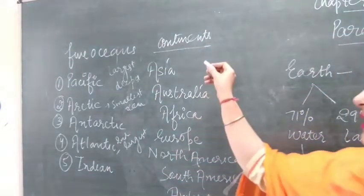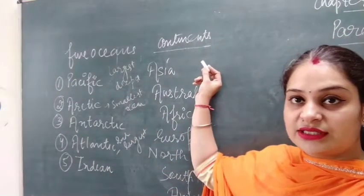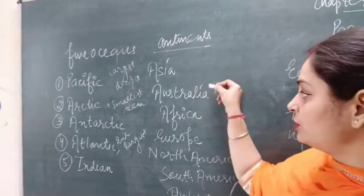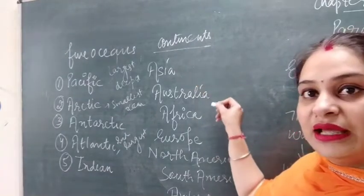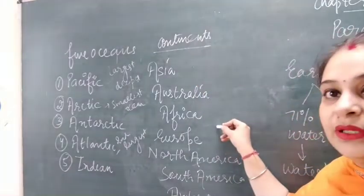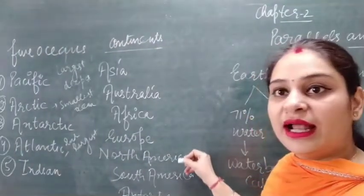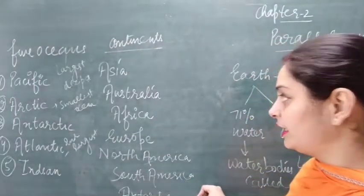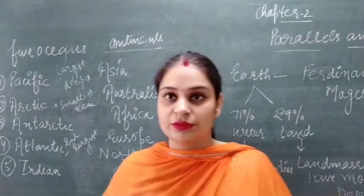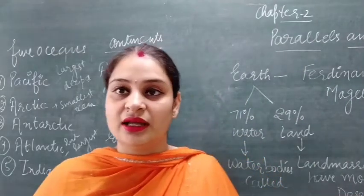There are seven continents in the world: Asia, Australia, Africa, Europe, North America, South America, and Antarctica. So this is a quick review of the chapter we discussed earlier, and now we will start our next topic of this chapter — Parallels, or we can call them Latitudes.